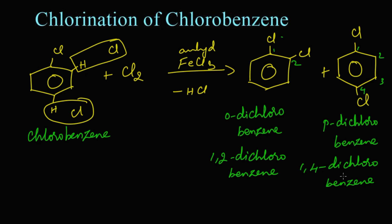To summarize: when chlorobenzene is chlorinated in the presence of anhydrous ferric chloride, the reaction takes place in the ortho position as well as the para position. If the reaction takes place in the ortho position, we get ortho dichlorobenzene, that is 1,2-dichlorobenzene. If it takes place in the para position, we get para dichlorobenzene, or 1,4-dichlorobenzene. The major product is para dichlorobenzene; ortho dichlorobenzene is the minor product.